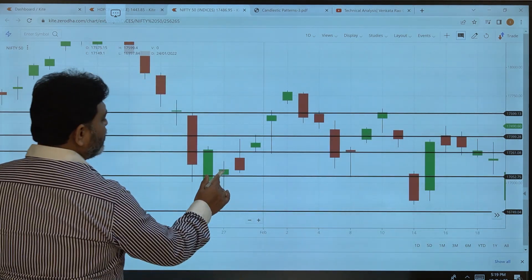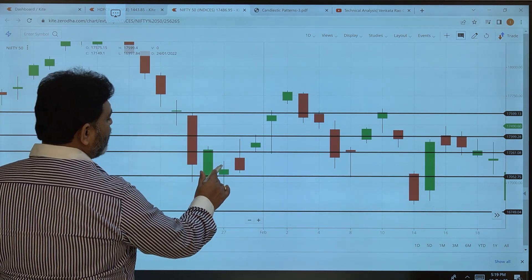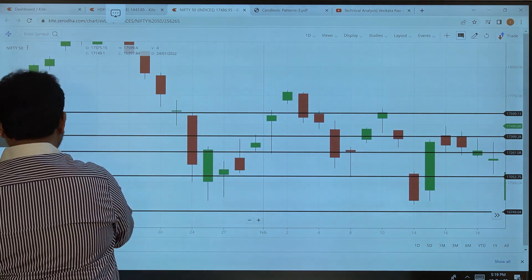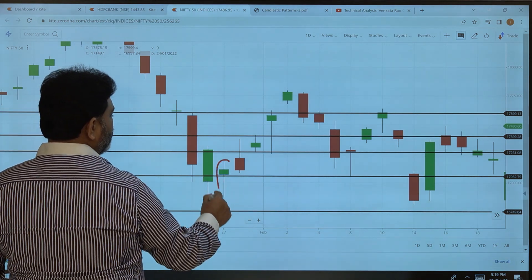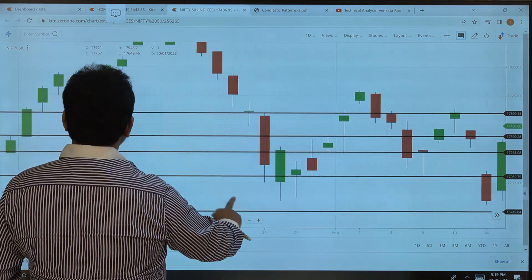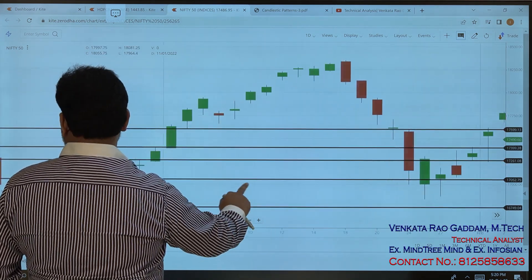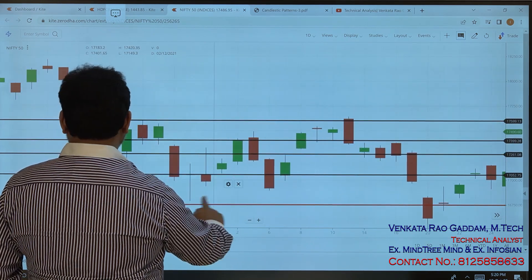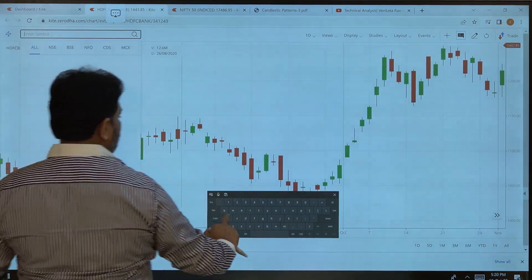Here we can see the real body. We can consider this as a hammer. There's a little bit of a top wick formed, then the real body. Here we can see.